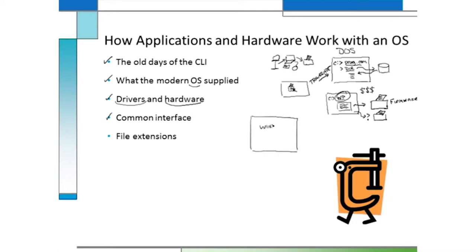Windows came up with the idea that you can create a program — like a word processing program — and all it has to do is be able to talk to Windows. Windows would then require everybody who builds a printer to create their own driver that could talk to Windows. That way, the development of software was much cheaper. All we had to do was make sure applications talked to Windows, and hardware devices talked to Windows, and Windows would do the translation for us — communicating content from a word processor to the driver that would then communicate to the print device.